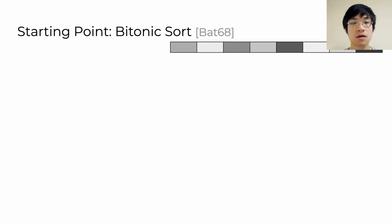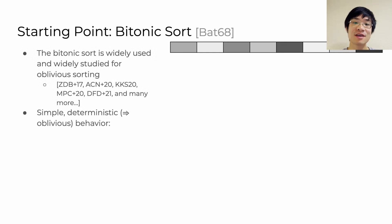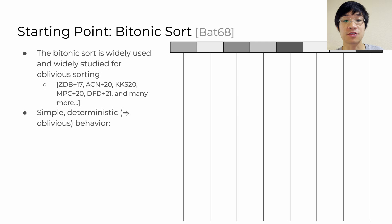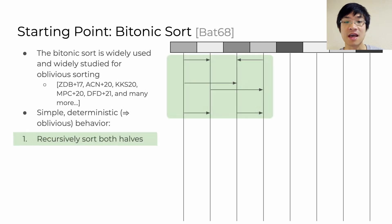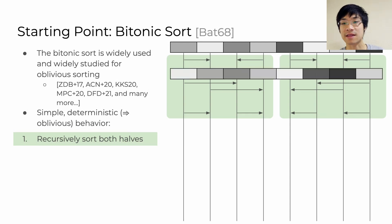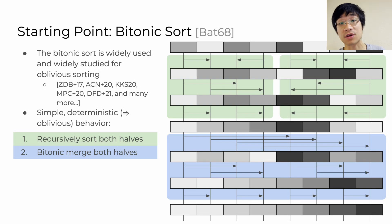Let's start with the first thing we did: iterate on Batcher's well-known bitonic sorting algorithm. This is a very commonly used algorithm for oblivious sorting, mainly because it has this very simple deterministic behavior, where we execute the exact same set of pairwise swaps in order to sort the data. Because the behavior is deterministic, it doesn't depend on any input data, which is why it's oblivious. It has this recursive construction — we first sort each half of the array using a bitonic sort, which has a series of swaps, and then we do a bitonic merge, and the end result is a sorted array.